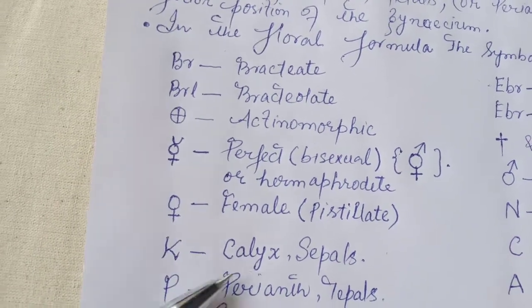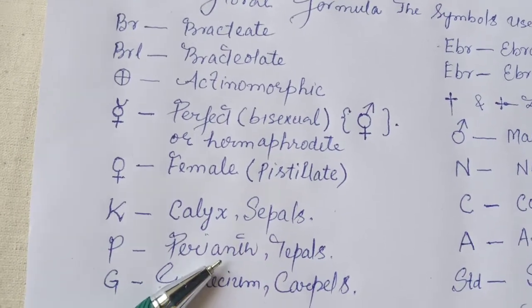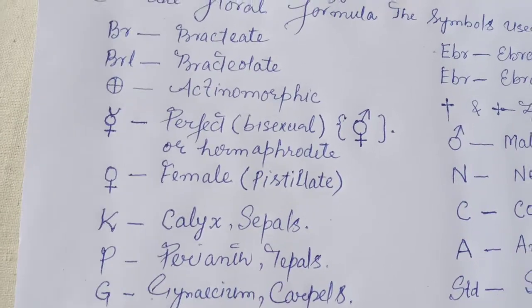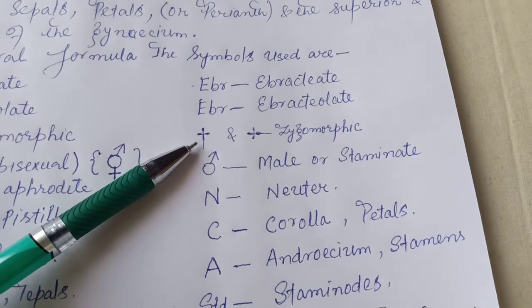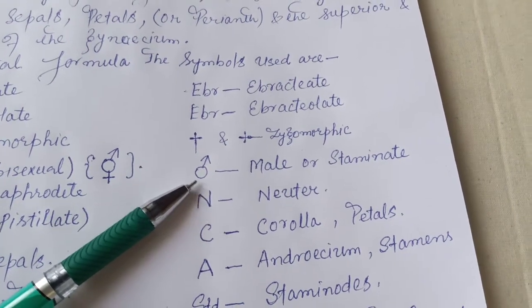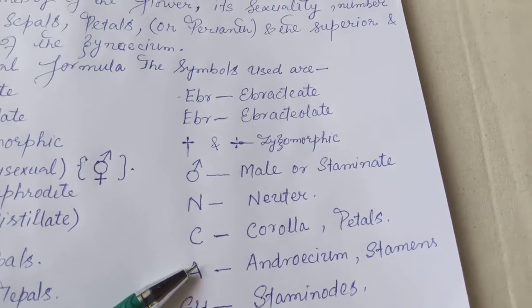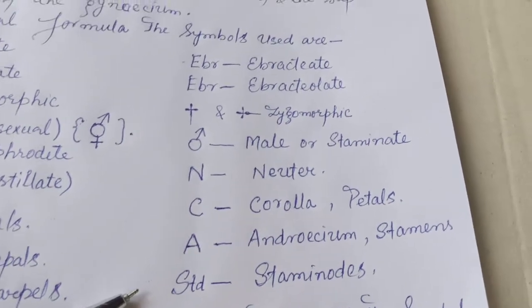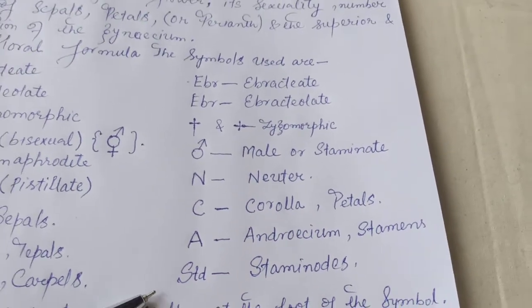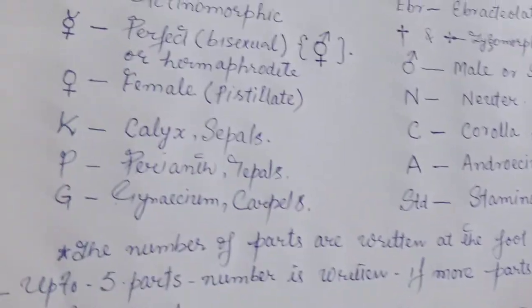K is for calyx, that is the sepals; P for perianth, the tepals; T for gynoecium and carpels. This symbol is for zygomorphic, this for male or staminate, and for neuter. C is for corolla and petals, A for androecium and stamens, and Std for staminodes — stamens which are not capable of producing pollen grains.